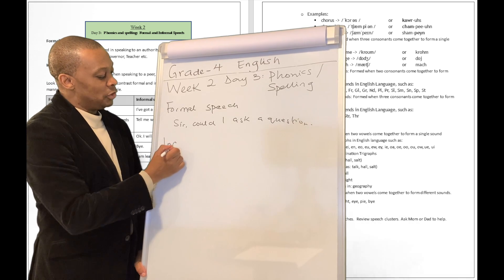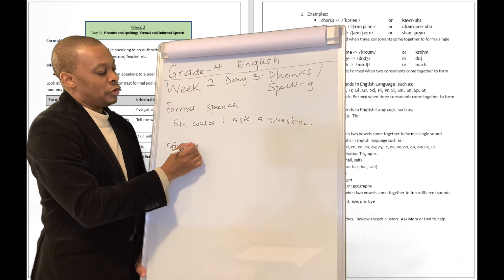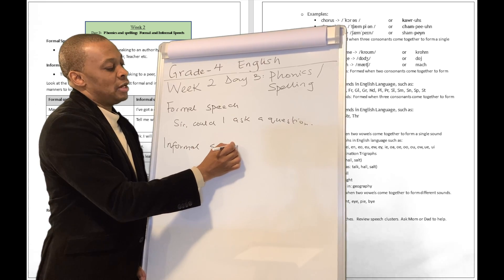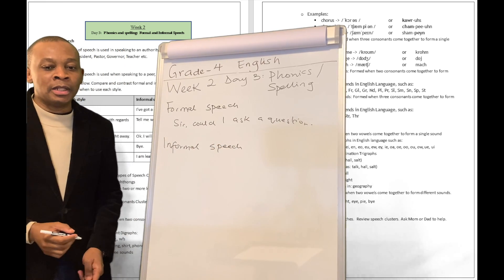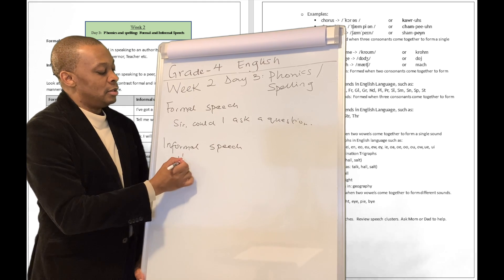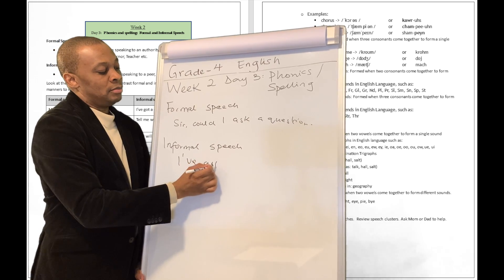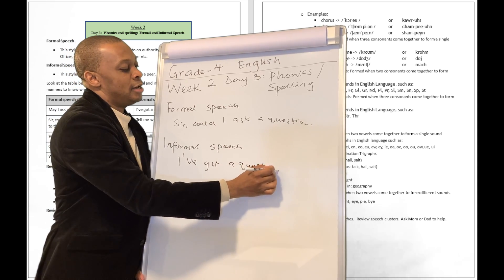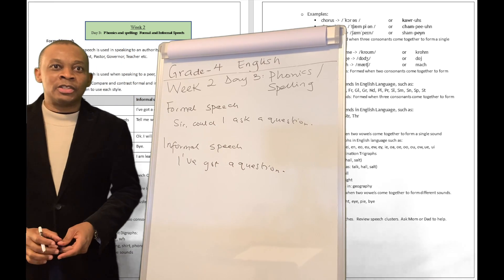An informal speech, talking to a friend or a close relative, you don't necessarily have to say sir or my lord. You're just going to say, well, I've got a question. That's how you're going to talk when you're talking to your friend.